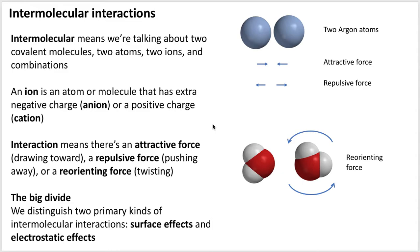The interaction between them means we're talking about an attractive force that draws them together, a repulsive force that pushes them apart, and sometimes a reorienting force that would cause a molecule to twist. The big distinction is that there are two primary kinds of intermolecular interactions: one we're calling surface effects, and the other we're calling electrostatic effects.